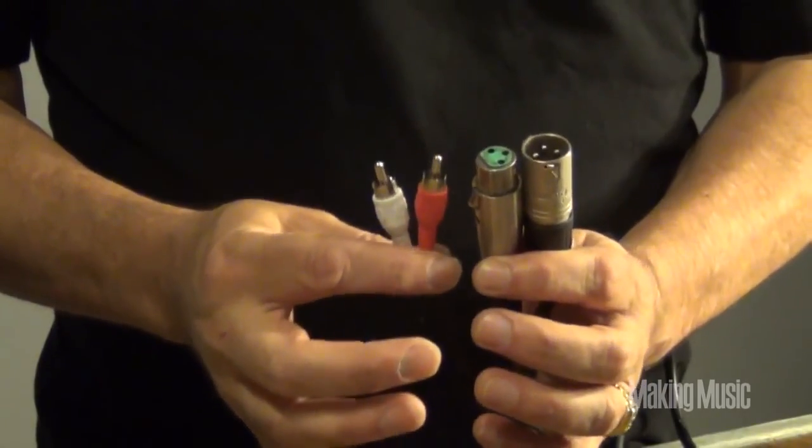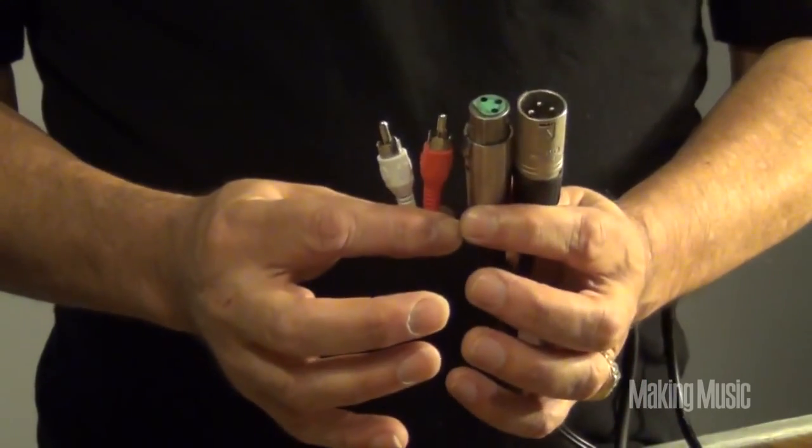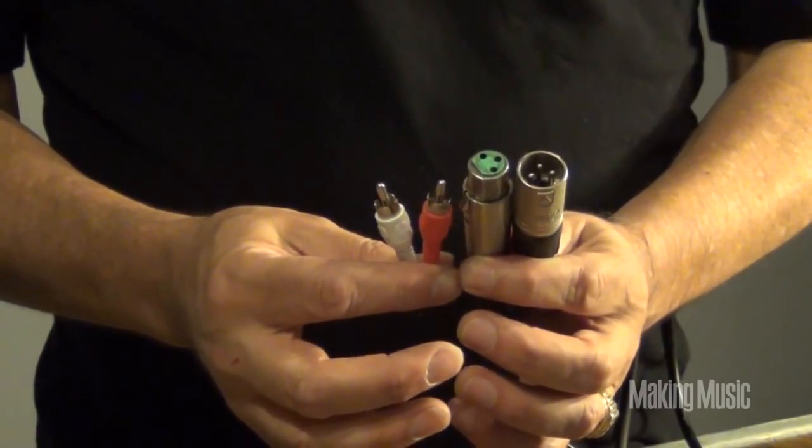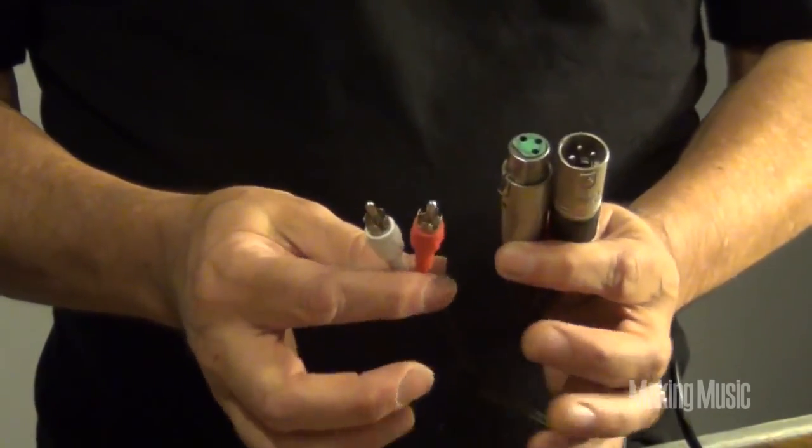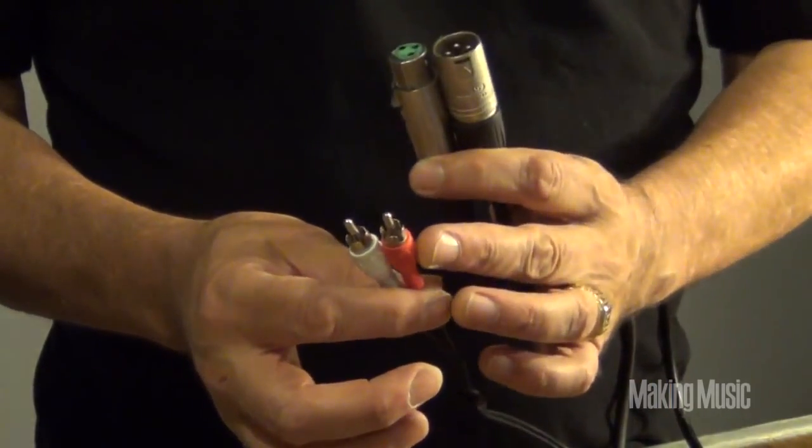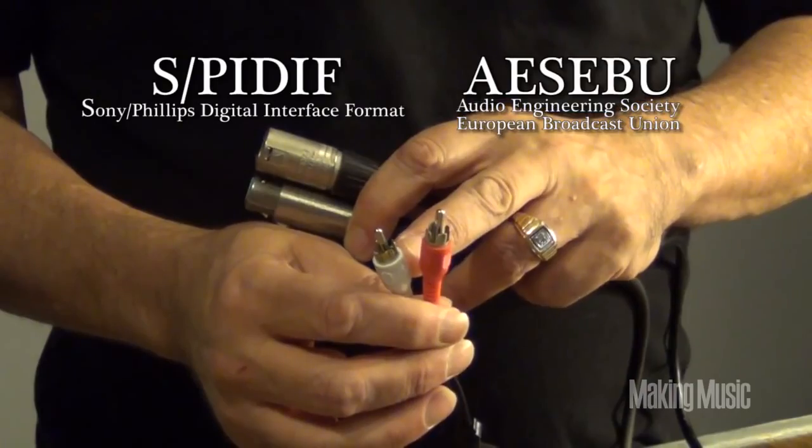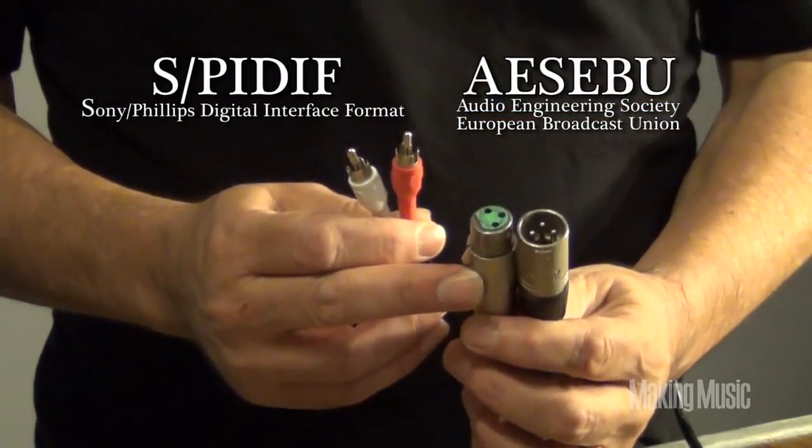Okay, now these look familiar, don't they? If you're sending digital information, boy, this gets a little confusing. These are called not the RCA jack and not XLR, but these are called SPDIF, and these are called AES-EBU.